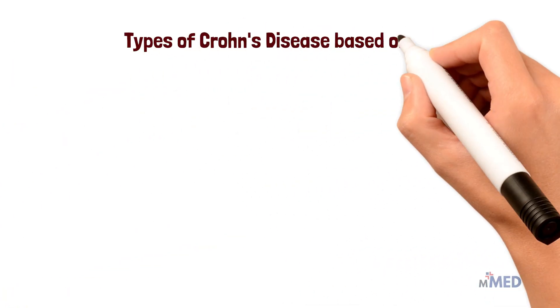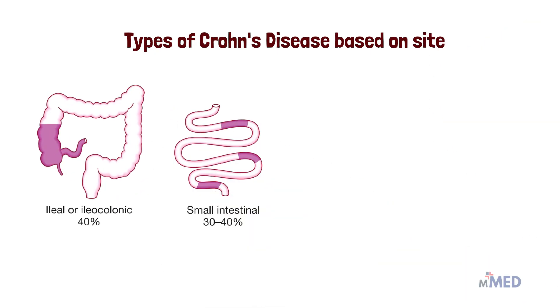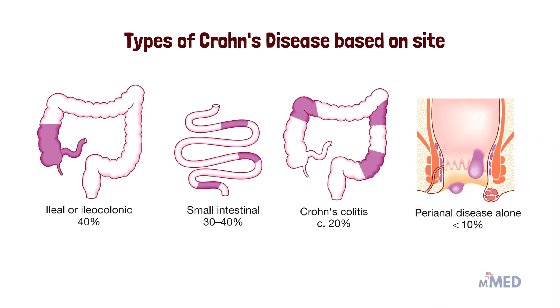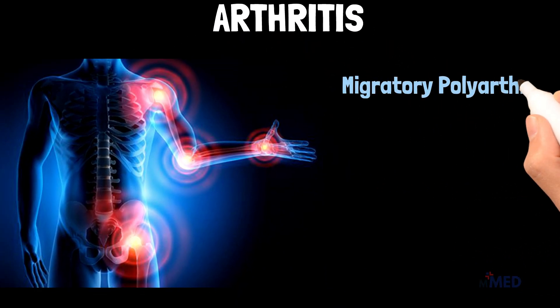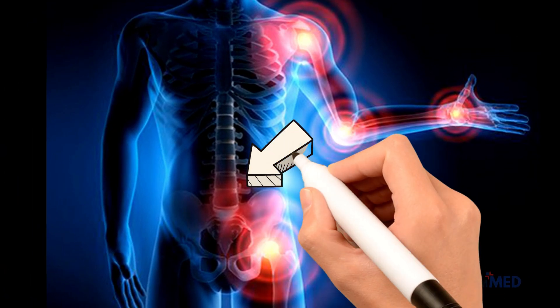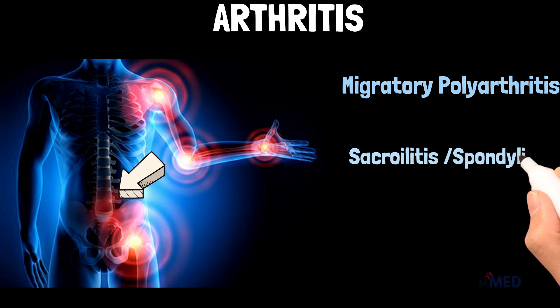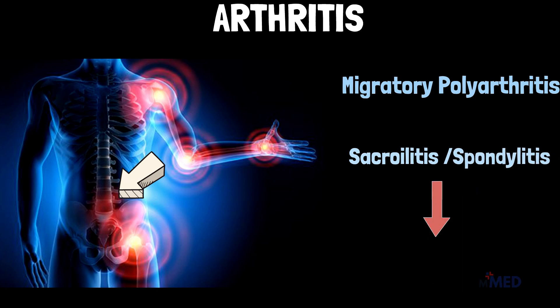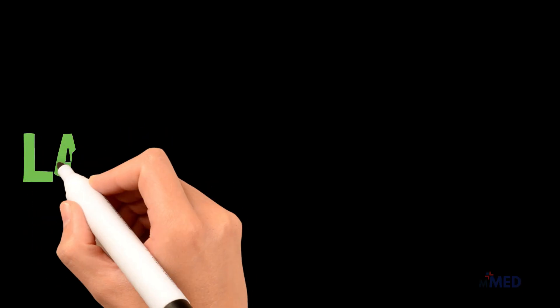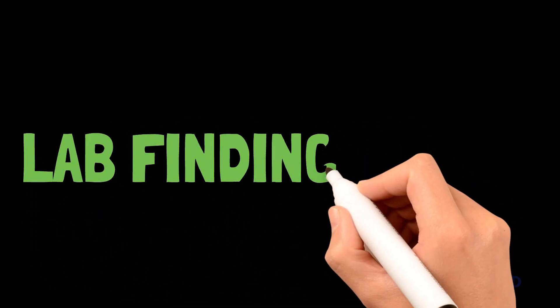Kidney stones and thromboembolic conditions are also sometimes seen in Crohn's disease. Types based on site: approximately 40% have ileocolonic lesions, 30–40% are in the small intestinal area, around 20% have Crohn's colitis, and less than 10% have perianal disease alone. The most common extra-intestinal manifestation of IBD is arthritis in large joints. When it affects multiple joints it is migratory polyarthritis; when it affects the spine it is sacroiliitis or spondylitis, causing severe back pain.